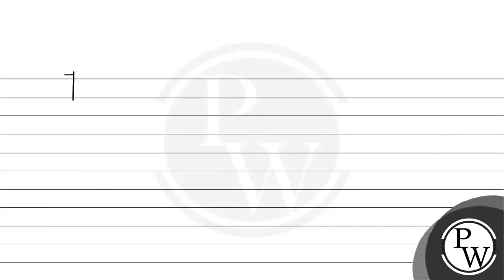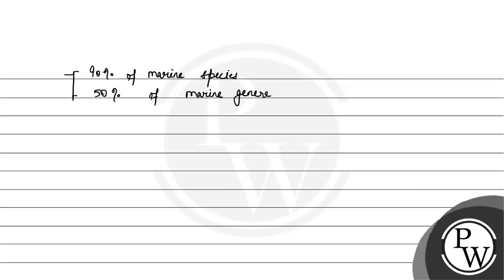Now let's talk a little about the data. About 90% of marine species were extinct. There was also 50% of marine genera that went extinct, and 85% of land species were extinct as well.